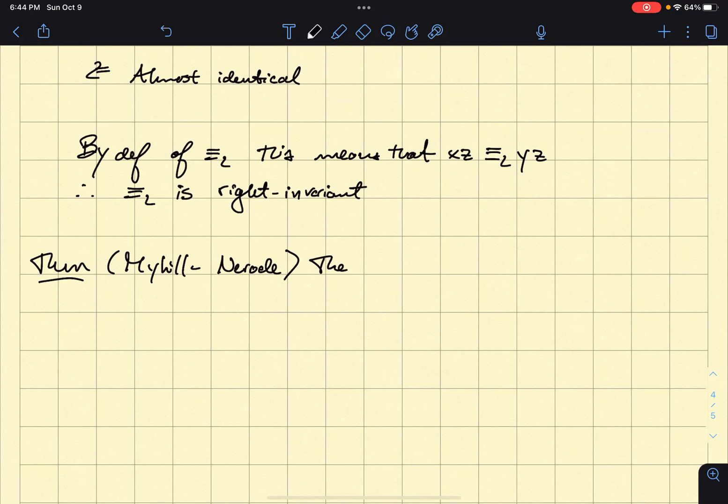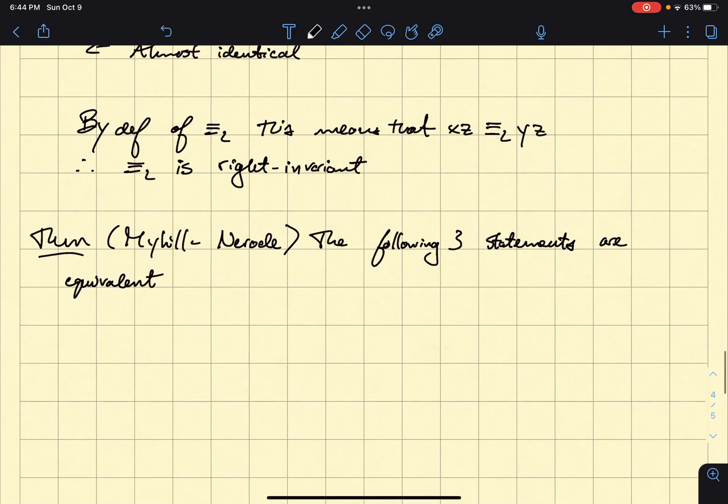It says that the following three statements are equivalent. Of course, I'm fixing an alphabet, or I'm supposing I have an alphabet which is not empty, and then some language which is a subset of sigma star. I'm just not rewriting that.